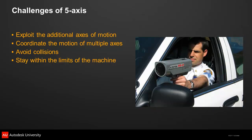You need to stay within the limits of the machine. There are physical limits on how far each axis can travel, and limits on how fast those axes can move in relation to one another. Linear motion is always faster and more accurate than rotary motion, so you need to control acceleration to prevent backlash when an axis moves too fast.